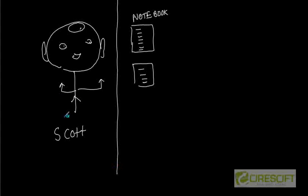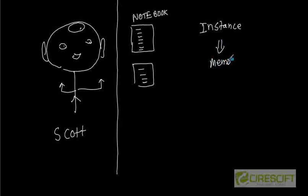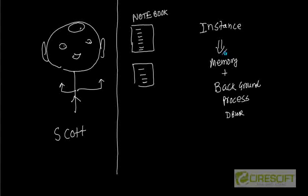I'm going to draw a line here. On one side I'm talking about the human, and on the other side I'm talking about his notebooks where he writes things. This analogy is exactly the same when we consider Oracle database server. An Oracle database server essentially consists of an instance, which is basically memory plus some background processes. Like the way Scott has hands, we have background processes — one called DB Writer — which writes to database files.